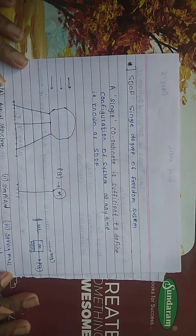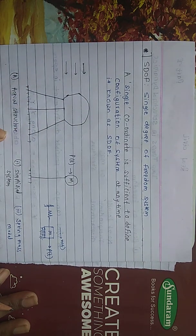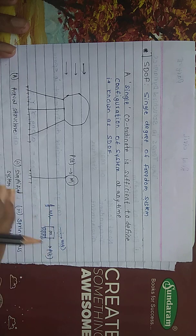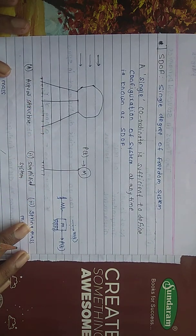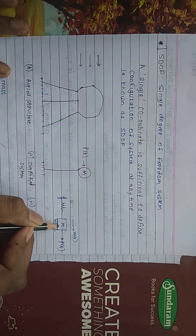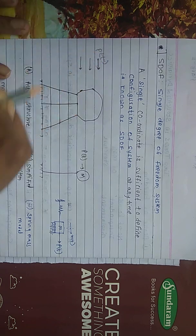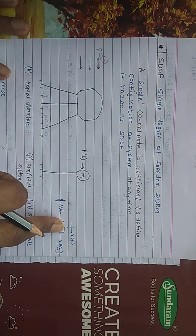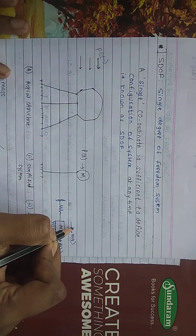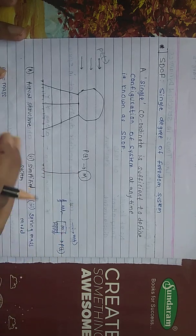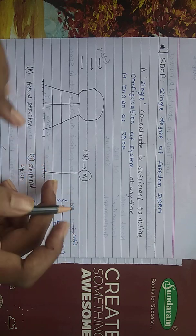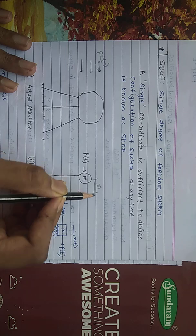Suppose there is a seismic load on this actual structure. For simplification we can draw it as a spring and mass system. We generally convert our structure into a spring-mass model where K means stiffness, M means mass of the structure, and P means the force varying with time. Because of the lateral load, the structure will move in that particular direction.